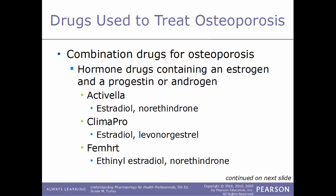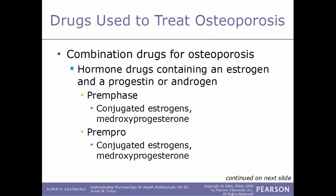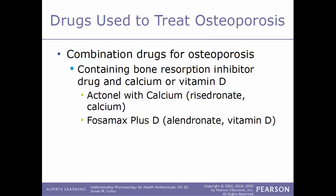Combination drugs are commonly used for osteoporosis. Some combine a hormone drug containing estrogen with a progestin or androgen — examples include Activella (estradiol and norethindrone), ClimaPro (estrogen and levonorgestrel), FemHRT (ethinyl estradiol and norethindrone), Premphase (conjugated estrogens and medroxyprogesterone), and Prempro (conjugated estrogens and medroxyprogesterone). Other combinations pair a bone resorption inhibitor with calcium or vitamin D, such as Actonel with Calcium (calcium and risedronate) and Fosamax Plus D (vitamin D and alendronate).